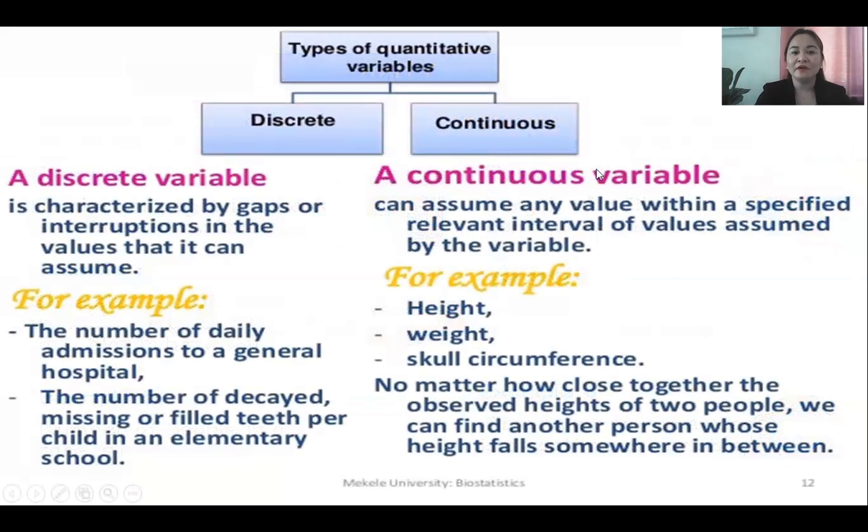For variables, we have discrete and continuous variable. Discrete variable is characterized by gaps or interruption in a value that it can assume, like the number of daily admissions to a general hospital, number of decayed, missing or filled teeth per child.